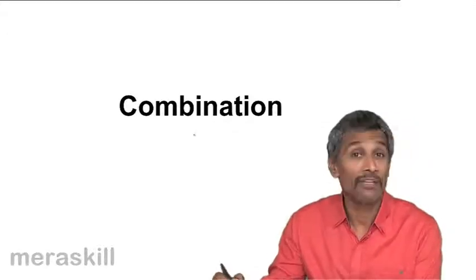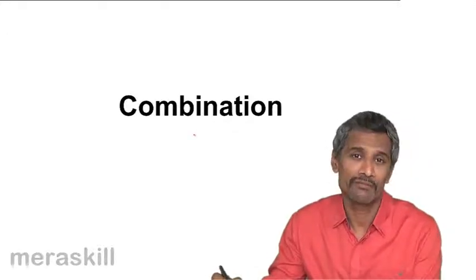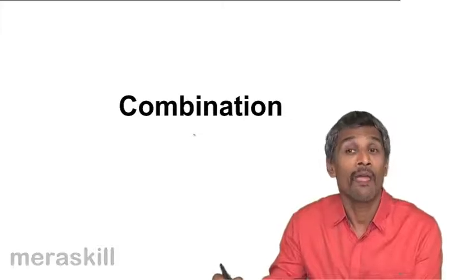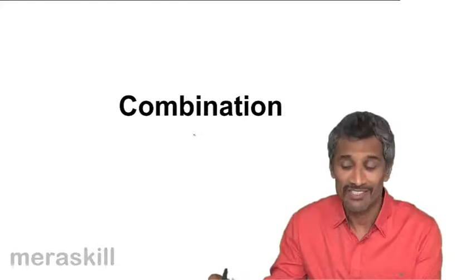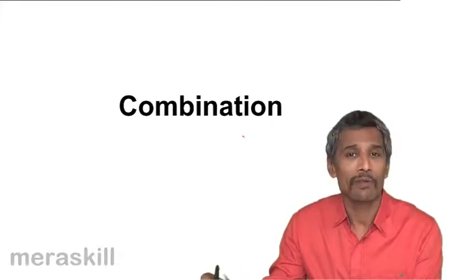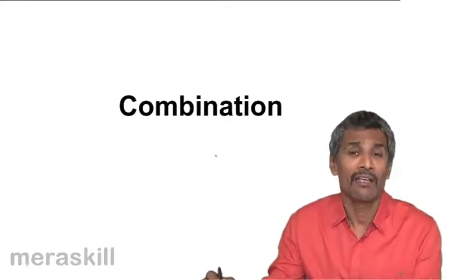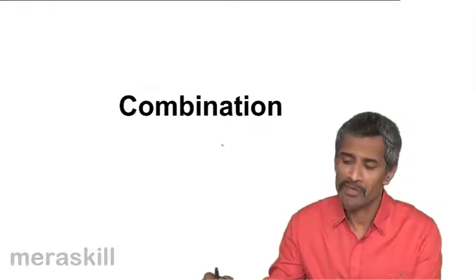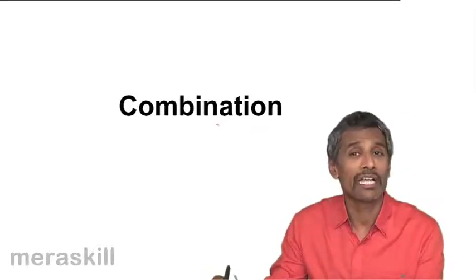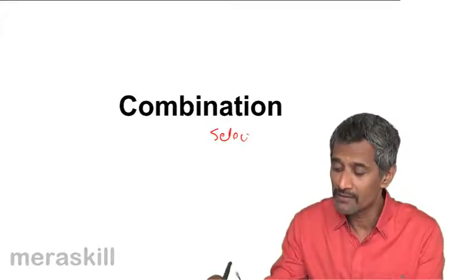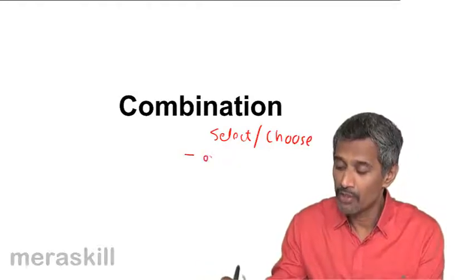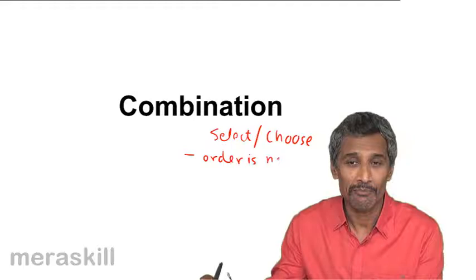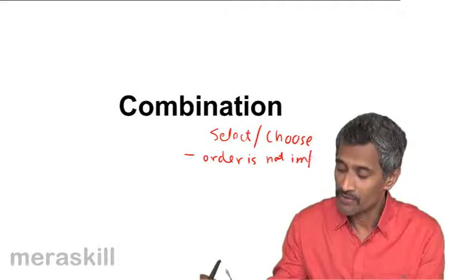We had a long topic of permutation and finished off a number of questions on it. Now, we had indicated that permutation is the result of combination. We will be moving on to the concept of combination in more detail so you can understand the difference between combination and permutation. As a reminder, combination is a situation wherein you select or choose terms where order is not important — order is not at all important.